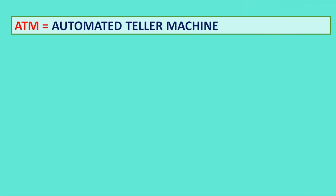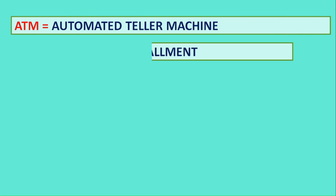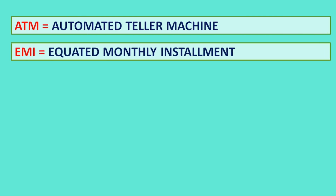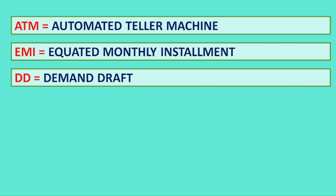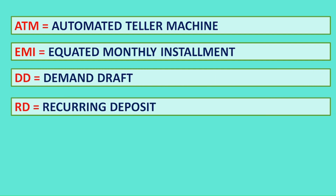ATM: Automated Teller Machine. EMI: Equated Monthly Installment. DD: Demand Draft.